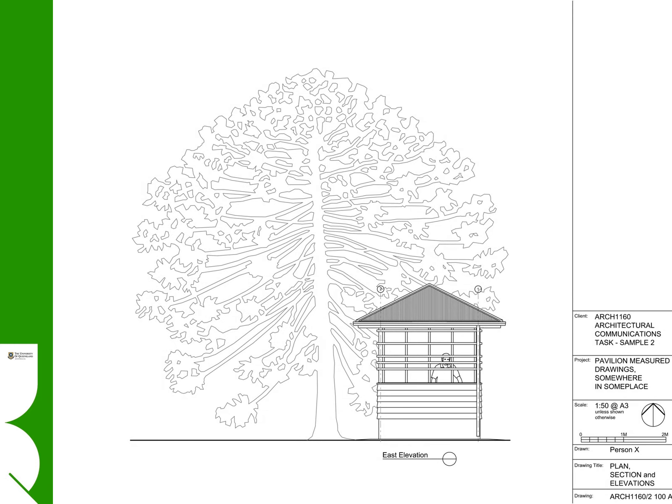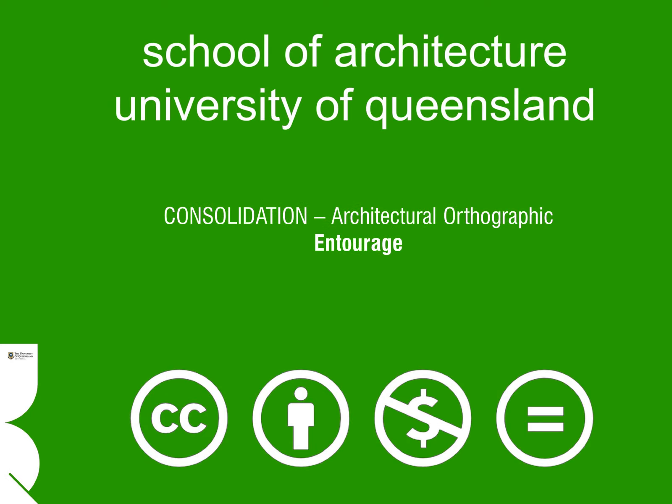Finally, like the human figure it is important to scale the entourage elements appropriately to the scene so that they assist with the perception of scale and context. This ends the entourage instructional in the consolidation series of the architectural orthographic drawing workshops. As you can see from the demonstration, you do not need exceptional drawing skill to produce convincing and effective entourage. However, it is useful to build and maintain your own library of entourage that you can draw upon on short notice. Make sure to follow up with the other related instructionals in the consolidation series and thanks again for your time.